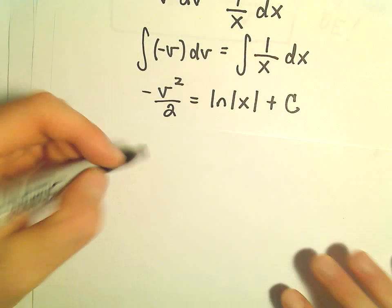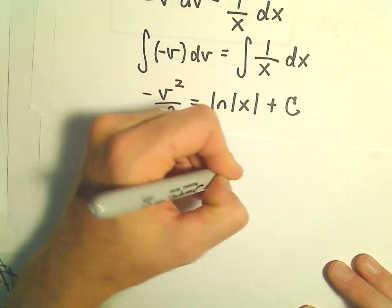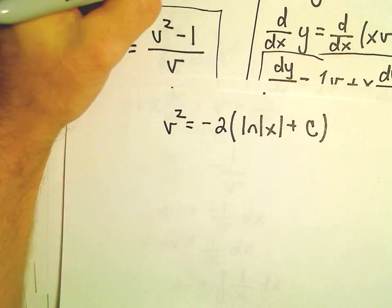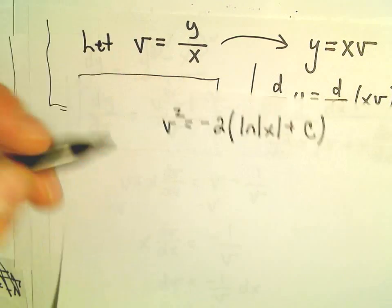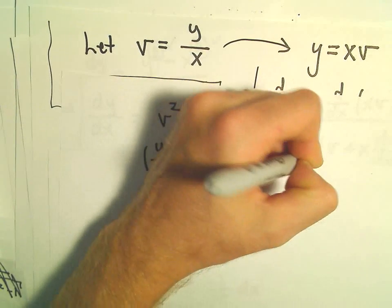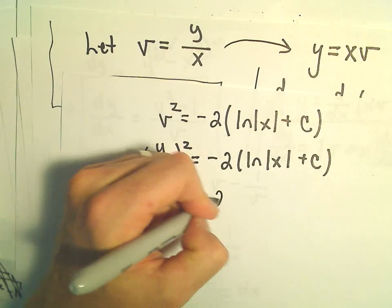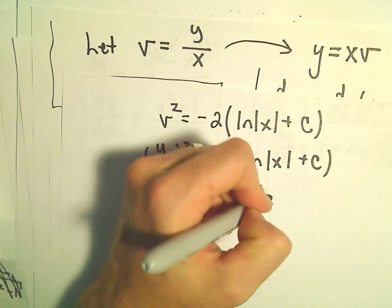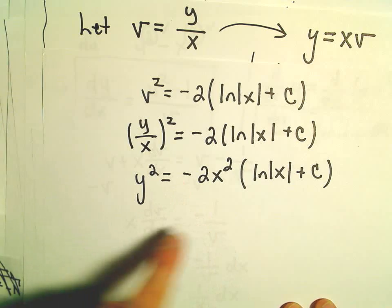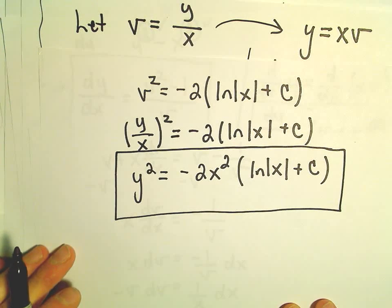We want the solution in terms of x and y, not v. Multiplying by negative 2 gives v squared equals negative 2 times the natural logarithm of x plus C. Since v equals y over x, we substitute back: y over x, squared, equals negative 2 ln(x) plus C, which means y squared over x squared equals that expression. Multiplying both sides by x squared, the solution is y squared equals negative 2x squared times the natural logarithm of x plus C.